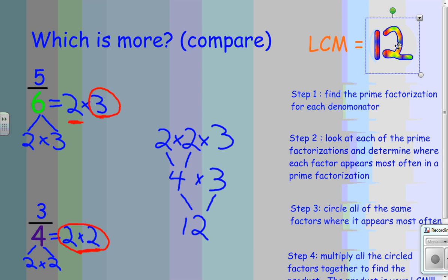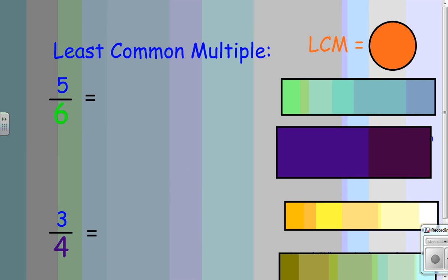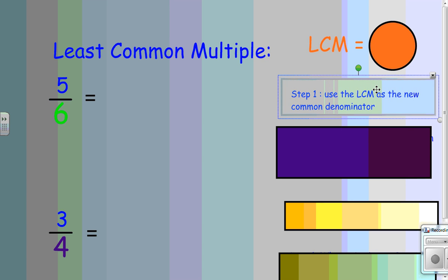Now, we're only partially done with this problem. Next thing we need to do in finding or comparing these two fractions is use the least common multiple as a new common denominator.